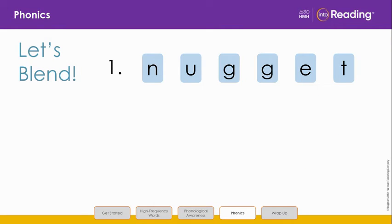We are going to blend the letters in line 1 to read another word. Say the letters and sounds with me. N-u-g-g-e-t.